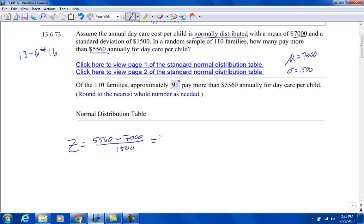That's negative 1,440 divided by 1,500. So that comes out to be negative 0.96.